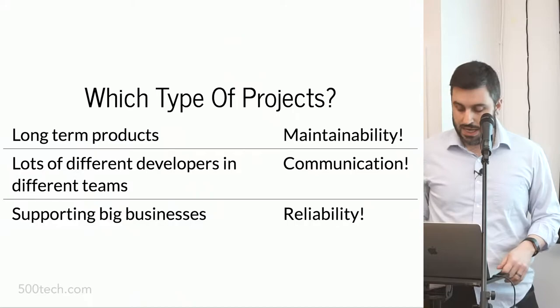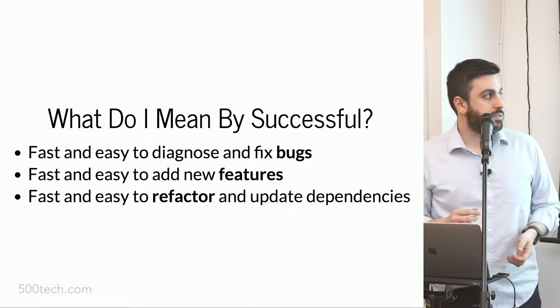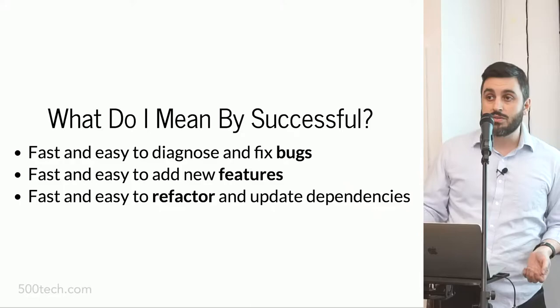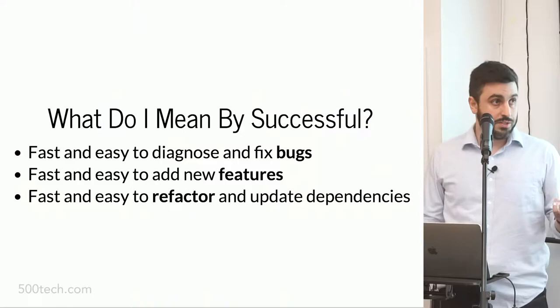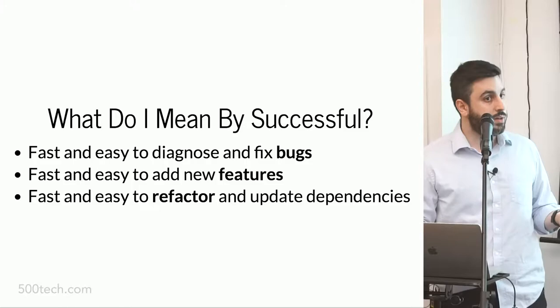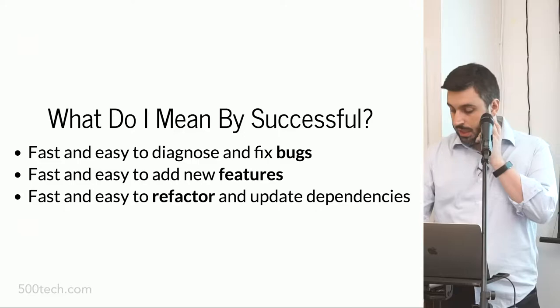So the definition of successful here is: whenever a piece of code is successful, that means it's fast and easy to diagnose and fix bugs that appear, fast and easy to add new features, and fast and easy to refactor and maybe update dependencies. These are the things we need to do every day in large-scale applications.